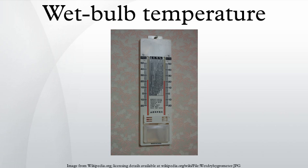A sustained wet bulb temperature exceeding 35°C is likely to be fatal even to fit and healthy people enclosed in the shade next to a fan. At this temperature we switch from cooling the skin to warming it. A sustained wet bulb temperature exceeding 35°C is a threshold at which the resilience of human systems is no longer able to adequately cool the skin. A study by NOAA from 2013 concluded that heat stress will reduce labor capacity considerably under current emissions scenarios.